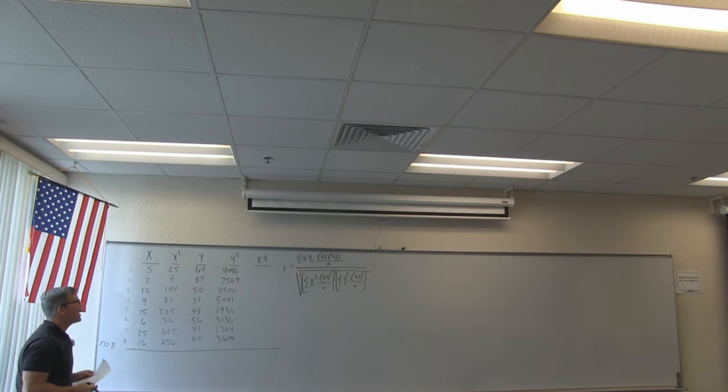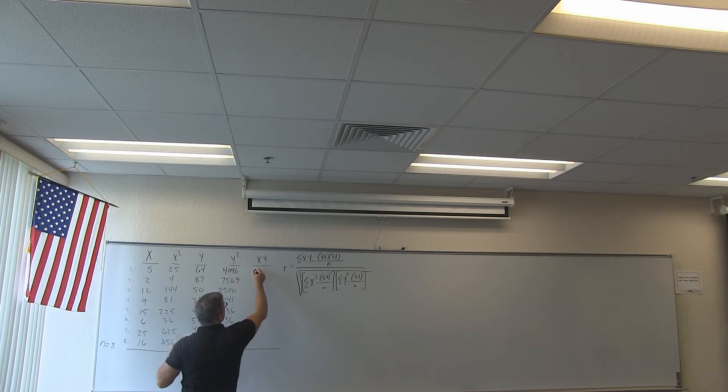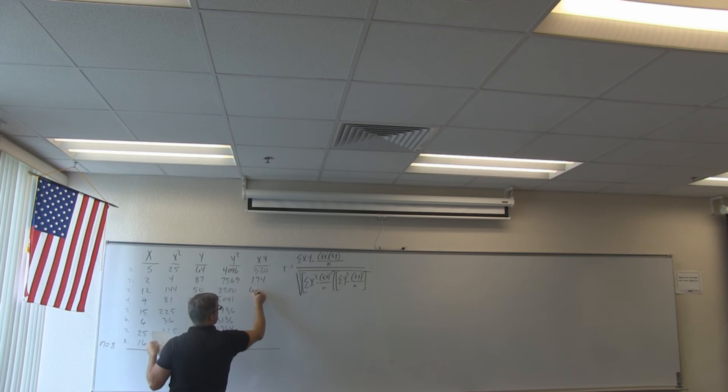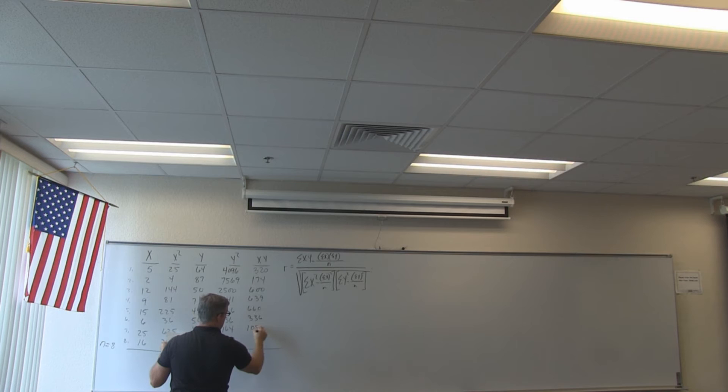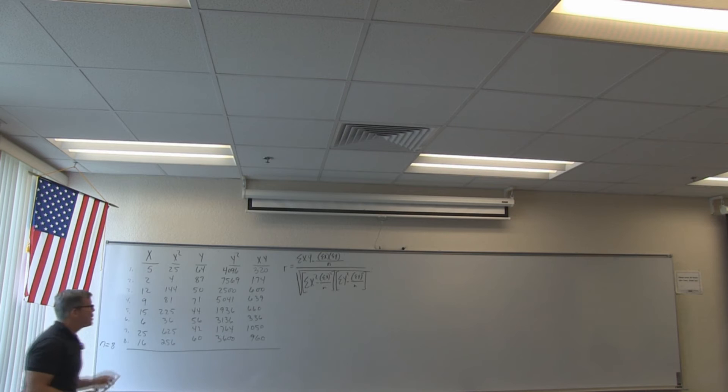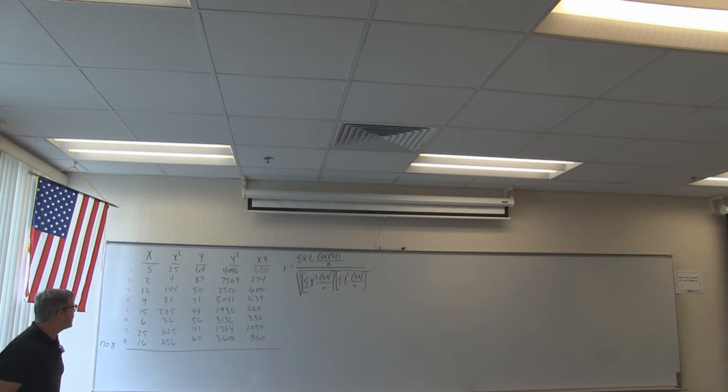X times Y products: 5 times 64 = 320, 2 times 87 = 174, 12 times 54 = 639 (approximately), then 660, 336, 1050, and 960. Just relax and be really careful with your keystrokes — got to get this right.